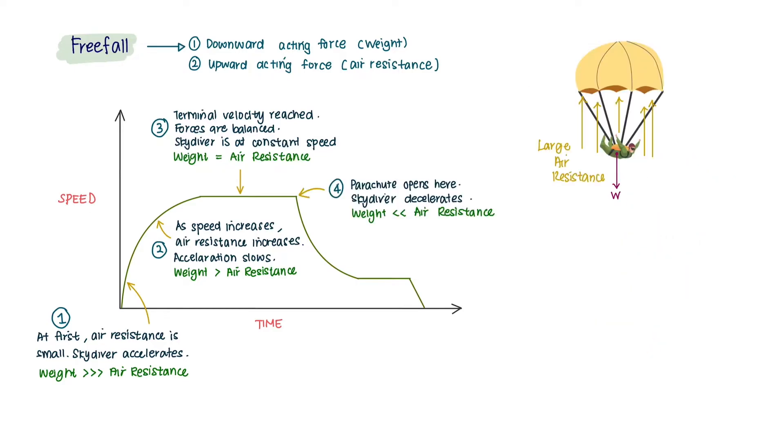When the skydiver opens the parachute, the air resistance increases due to the increased surface area. The upward force of air resistance on the skydiver increases, slowing the acceleration of the skydiver's fall.